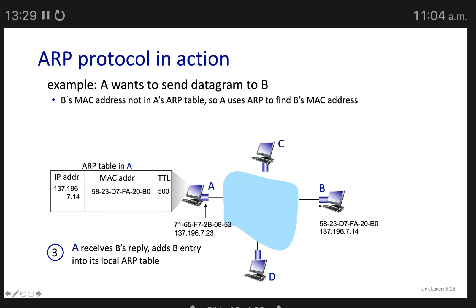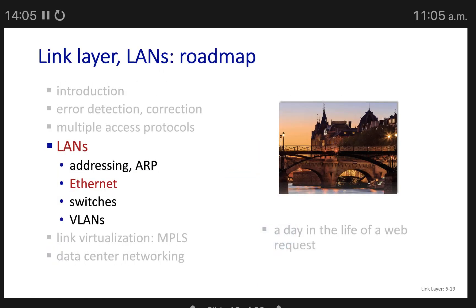If there's a switch in between, when A broadcasts its ARP query, other machines like C and D also learn A's MAC address. The switch also maintains an ARP table, storing MAC addresses of all connected computers.